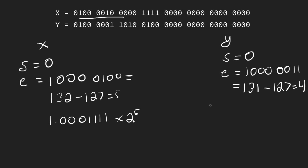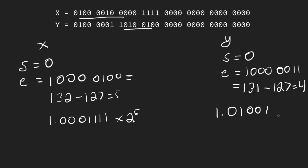So our representation of y in normalized binary scientific notation — taking the mantissa and stopping at the last one — is 1.010101001 times 2 to the fourth.